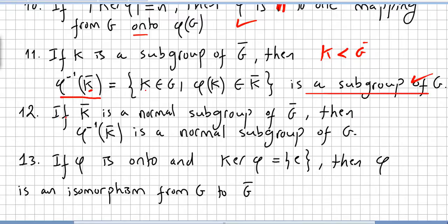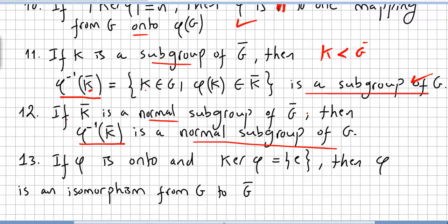Another property of the homomorphism: if K-bar is a normal subgroup of G-bar, then the inverse image of K-bar is a normal subgroup of G. So, if K is merely a subgroup of G-bar the inverse image is a subgroup of G; if K-bar is a normal subgroup of G-bar, the inverse image of K-bar is a normal subgroup of G.